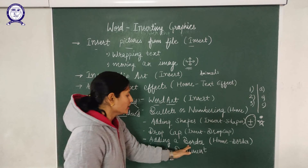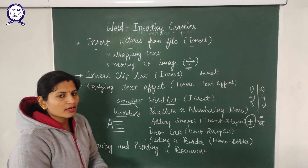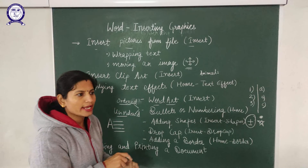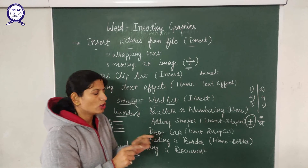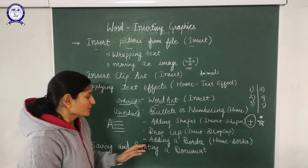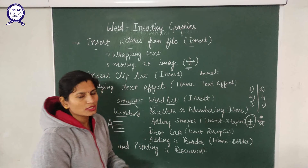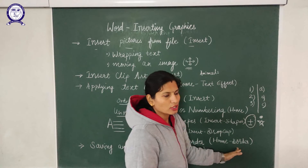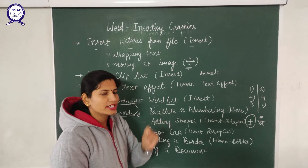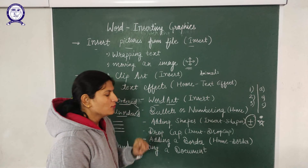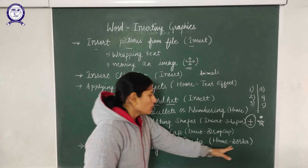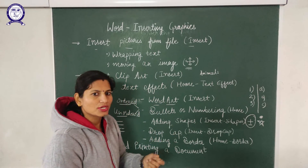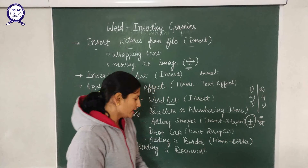Next is adding a border. When you have created your document and want to add a border around it or around a heading, you can use this option available under the Home tab. Select the border option — the 'Borders and Shading' option is provided. Multiple options are available: you can choose how the border looks and which color to use.